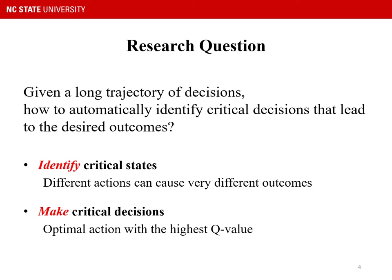Based on our results, we believe that in order to identify critical decisions, we need to separate what we call critical states from critical decisions. Critical states are those states where different actions can cause very different outcomes. Critical decisions refers to the fact that, on the critical states, the optimal action with the highest Q value should be carried out. We will show that we need to separate these two tasks: identifying critical states and making critical decisions. In this work, we propose and evaluate a long-short-term rewards framework to identify critical decisions.